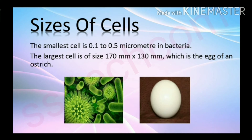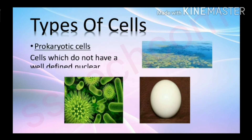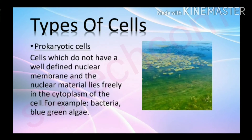The largest cell is of size 170 millimeters by 130 millimeters, which is the egg of an ostrich. Types of cells: prokaryotic cells are cells which do not have a well-defined nuclear membrane, and the nuclear material lies freely in the cytoplasm.